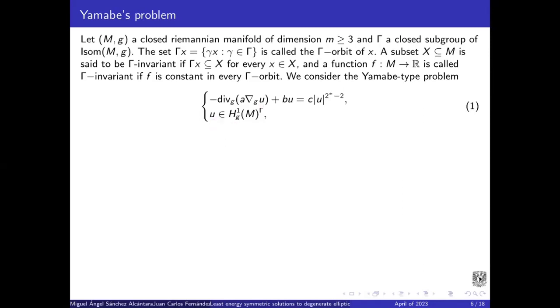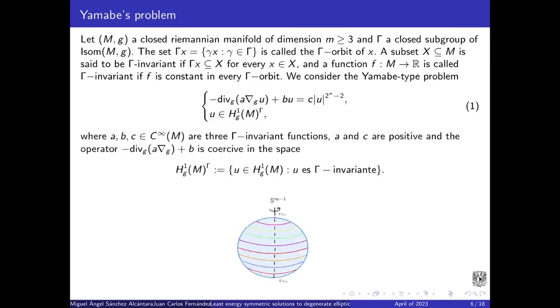And u a function on the Sobolev space. A, b and c are three Gamma invariant smooth functions. A and c are positive. And this operator is coercive. That means that the induced norm is equivalent to the standard norm of the Sobolev space. And this space is the space of Gamma invariant functions.